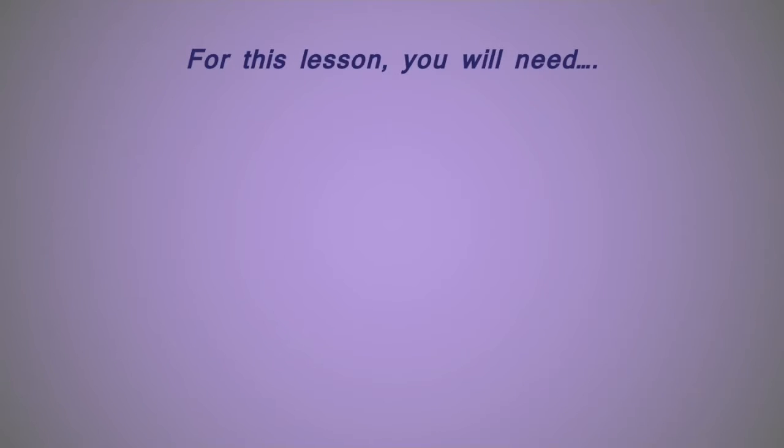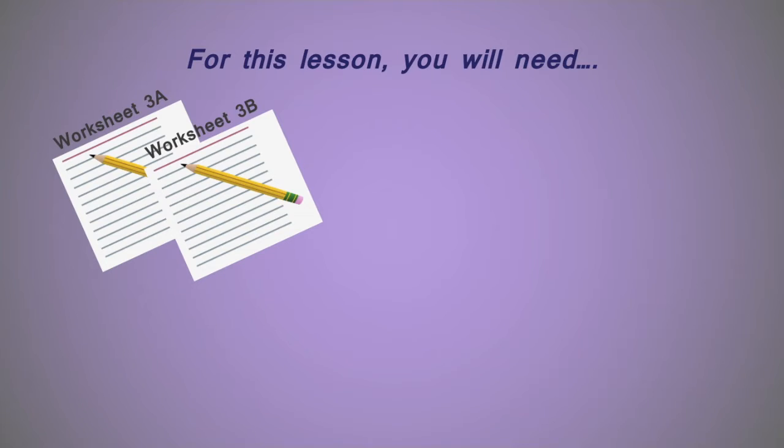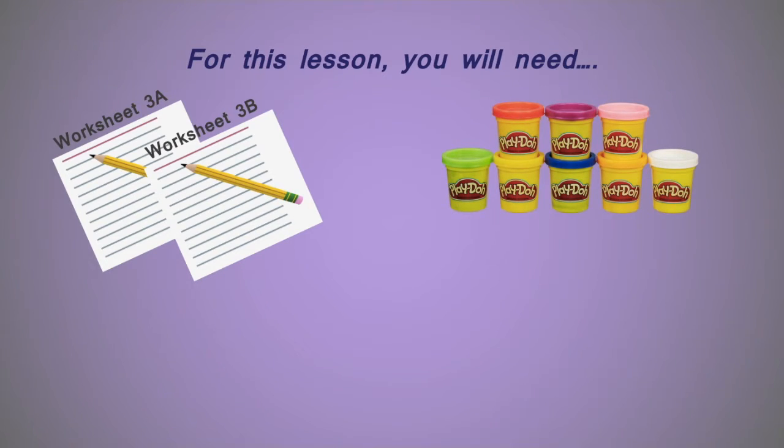For this activity, you'll need the following materials. Printed copies of worksheets 3A and 3B for each student. Assorted containers and colors of Play-Doh to divide among student groups. One plastic brain mold for each student group, or alternatively, you can share a single tray with different molds for the entire class.